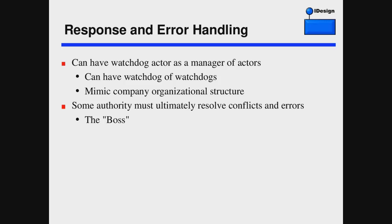For error handling, you can have a dedicated watchdog actor that manages other actors and deals with their issues. Since the watchdog itself could fail, you can have watchdogs of watchdogs — basically mimicking your own company's organizational structure and how conflicts are resolved. If one team can't solve something, they escalate to their manager. If that manager can't do it, they escalate further. There's always some kind of root authority that says 'you do this, you do that.' You're going to have to mimic that kind of authority too.